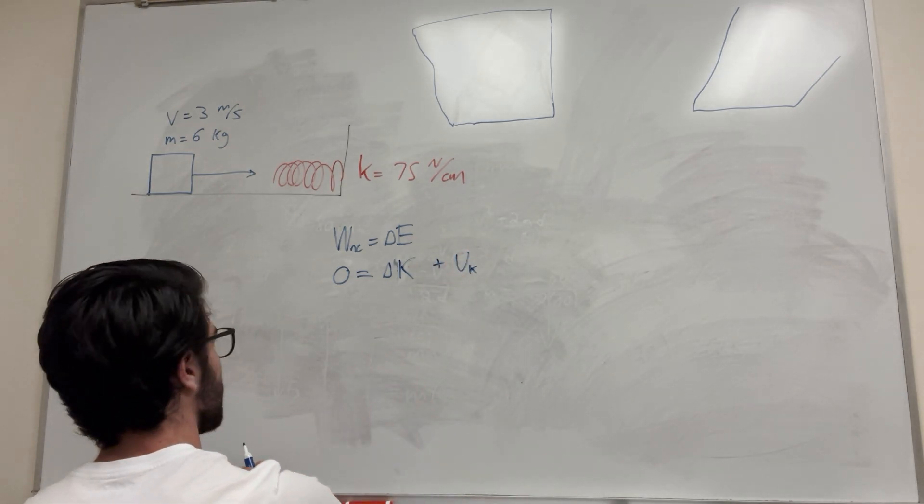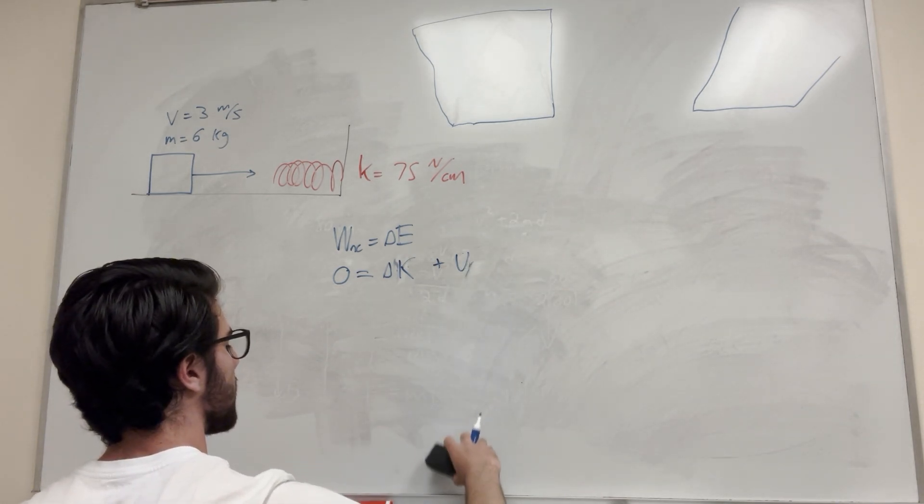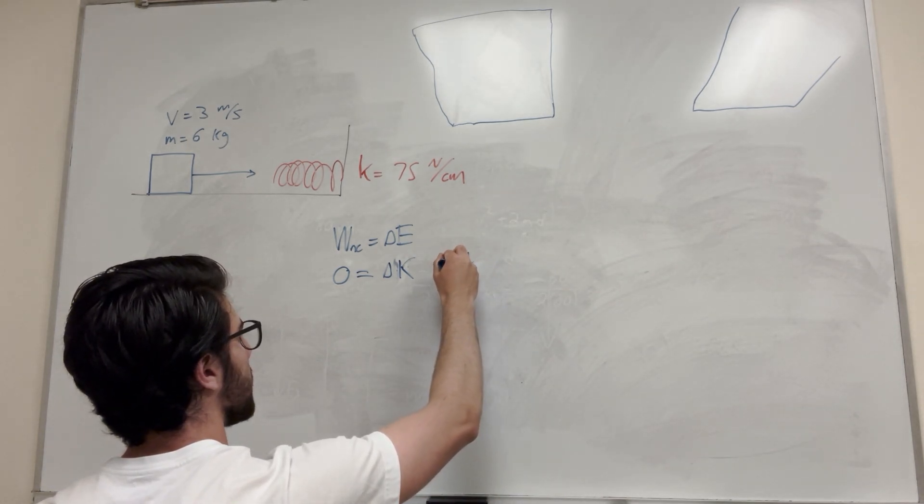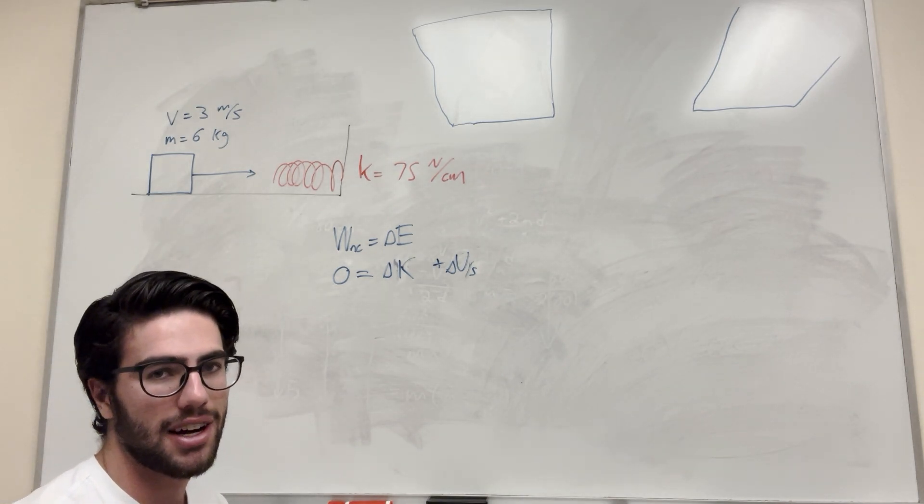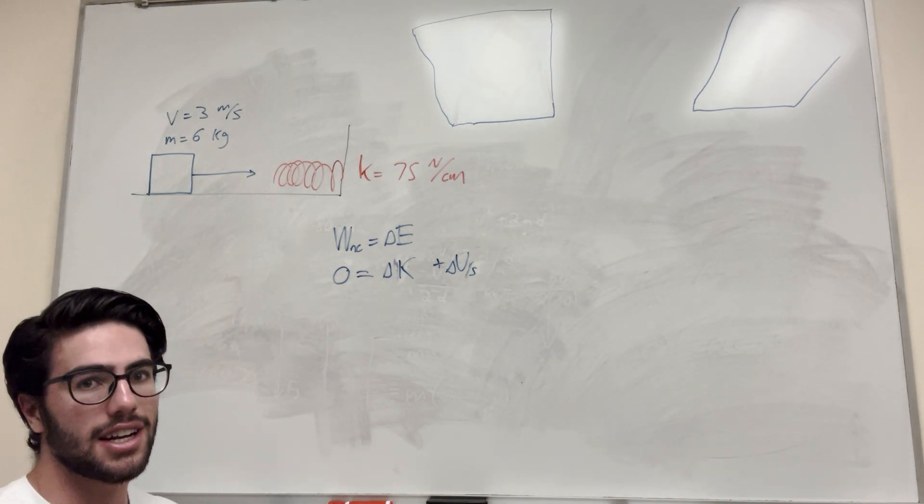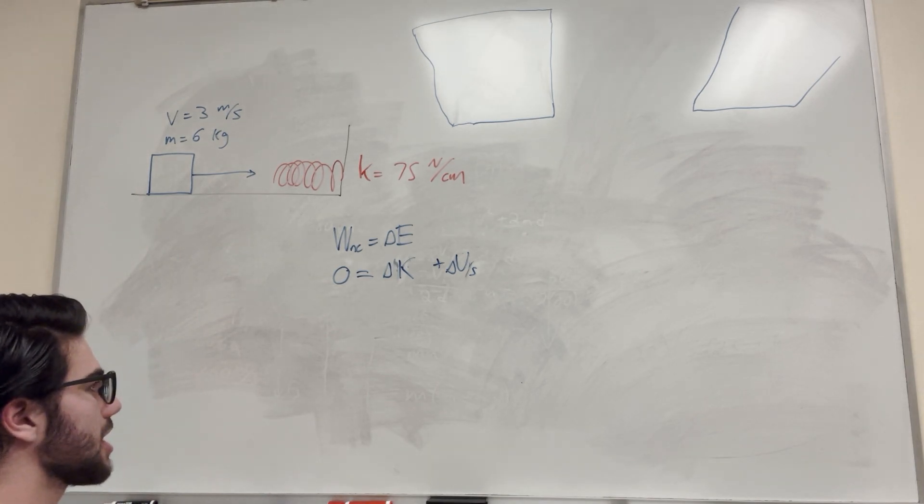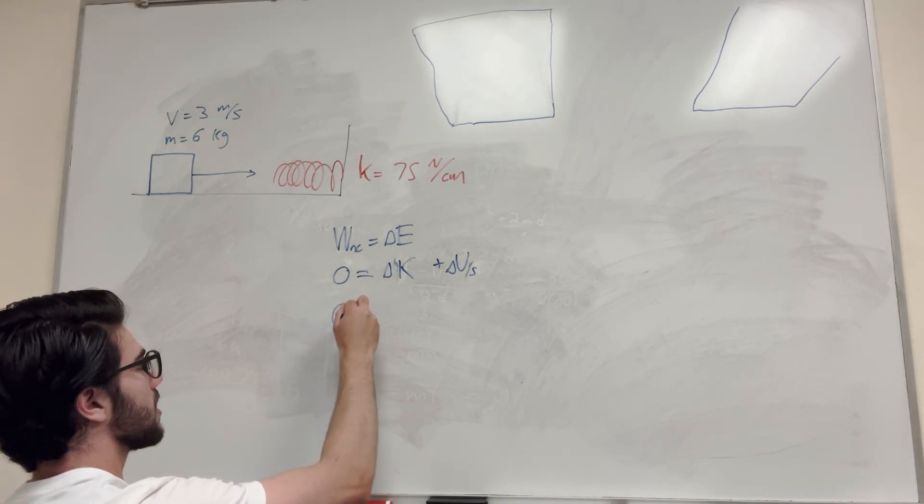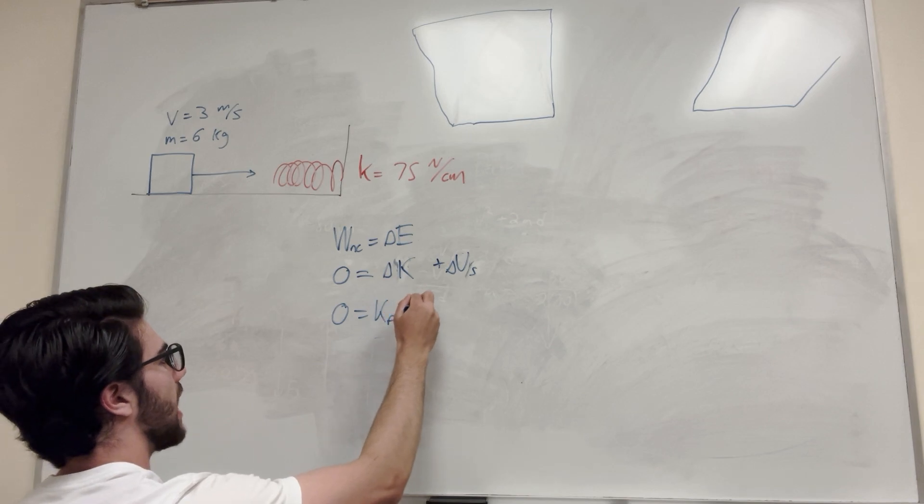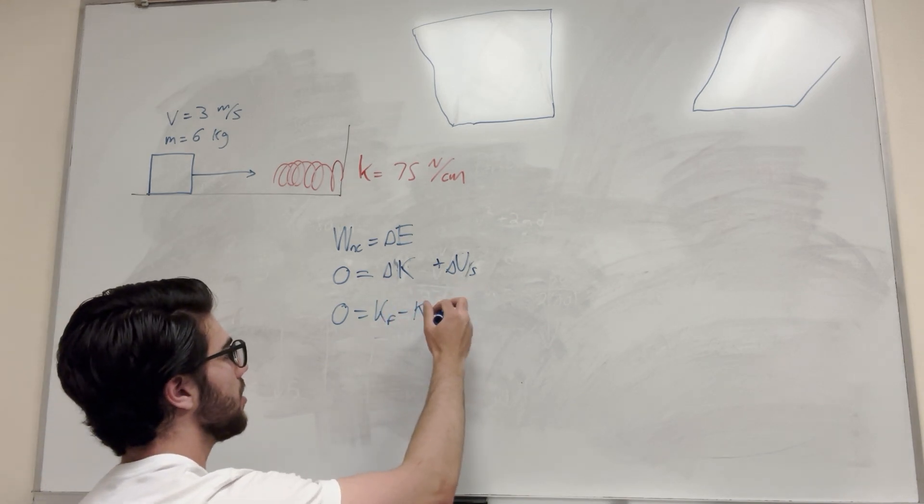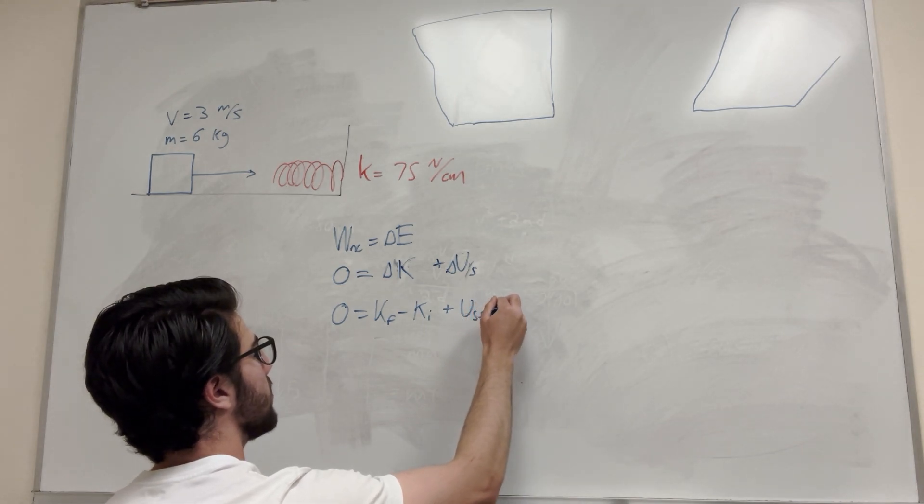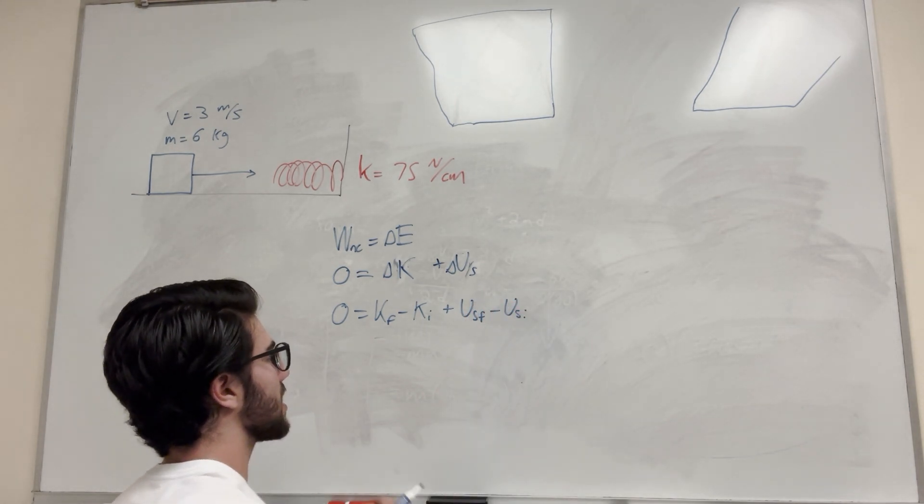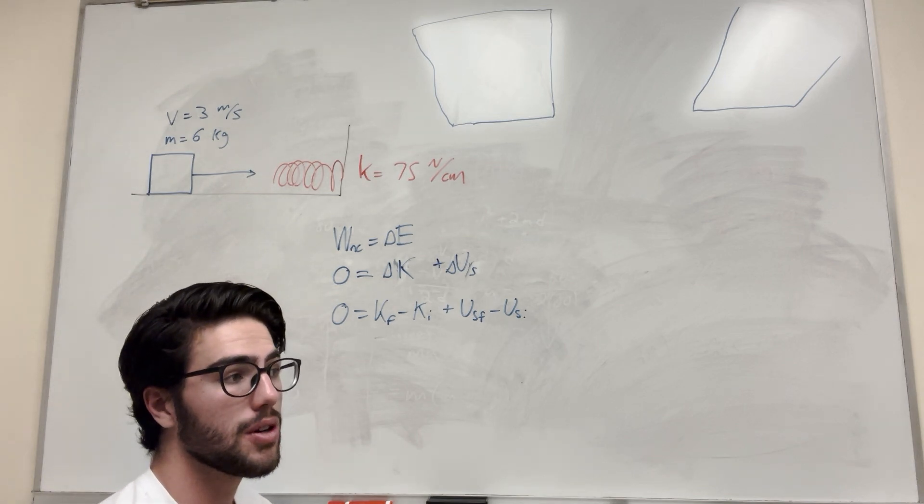So basically we're here now. These are two energies that can move around. So let's expand this some more. Zero is equal to K final minus K initial, and then plus U is equal to U_S final minus U_S initial. That's the definition of delta K and delta U is final minus initial.